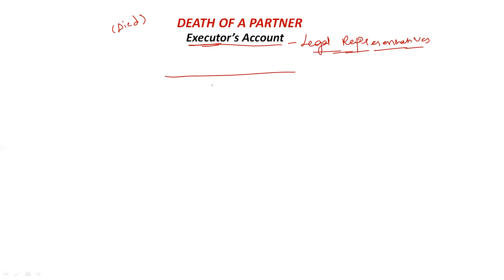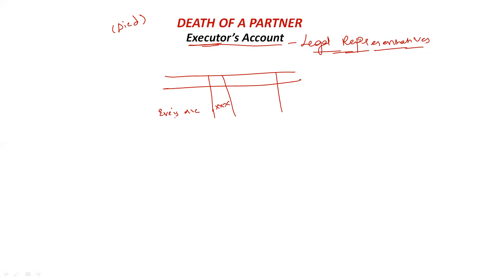When we prepare the deceased partner's capital account, we get a certain balancing figure. We transfer that balancing figure to the executors account. In my previous sessions we solved how to prepare the deceased partner's capital account, and the balancing figure obtained there is transferred to the executors account.